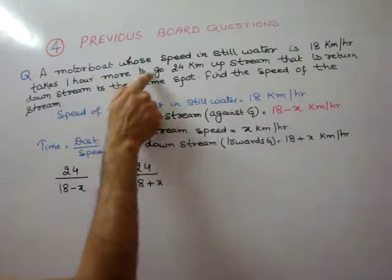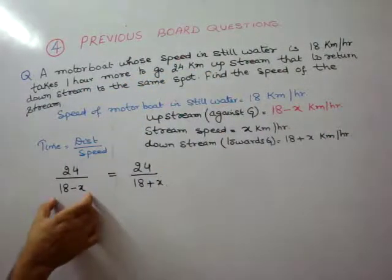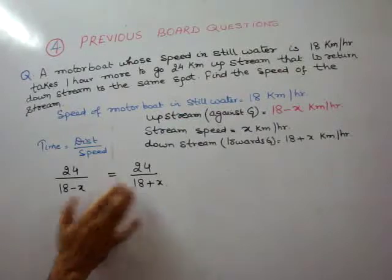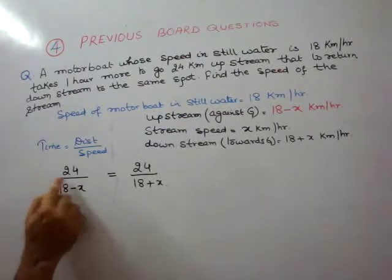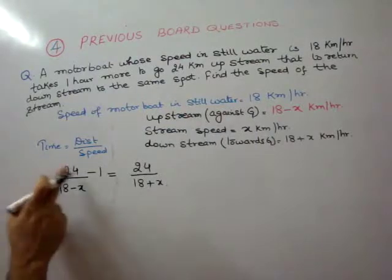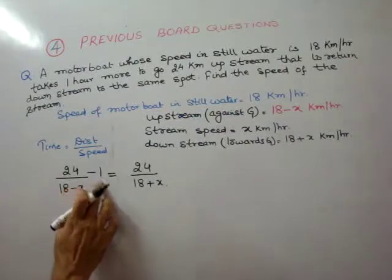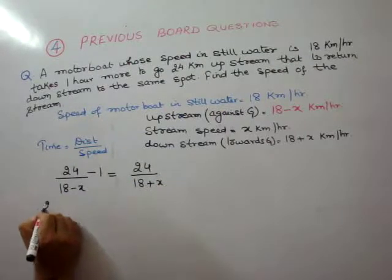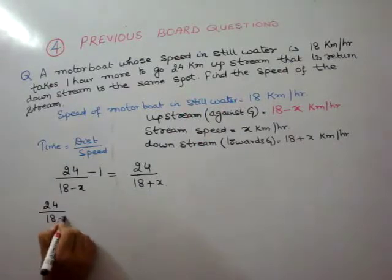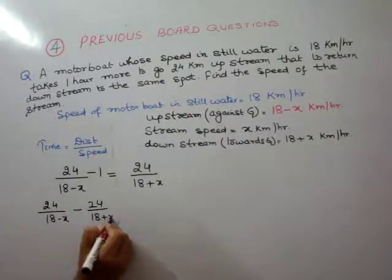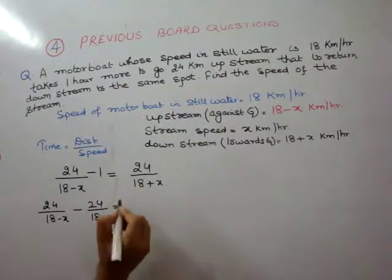It takes one hour more to go 24 km upstream. So upstream has taken one hour more. That is, to return downstream — since it took more time, to make them equal we do minus one. So just the opposite: minus one. We bring the value to this side, giving us: 24/(18 minus x) minus 24/(18 plus x) equals 1.